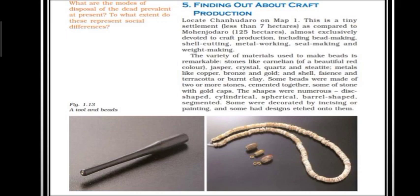Chanhudaro was a tiny settlement — less than 7 hectares — as compared to Mohenjodaro at 125 hectares. However, it was an excellent craft production centre for bead making, shell cutting, metal work, seal making, and weight making.